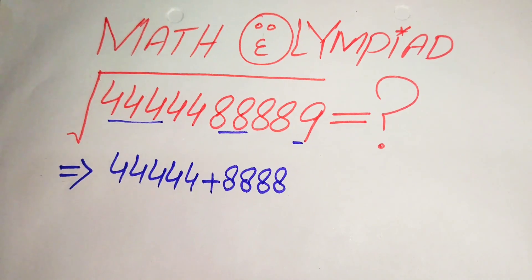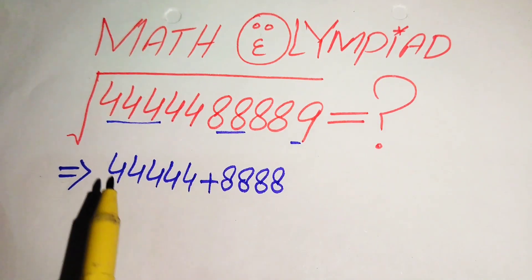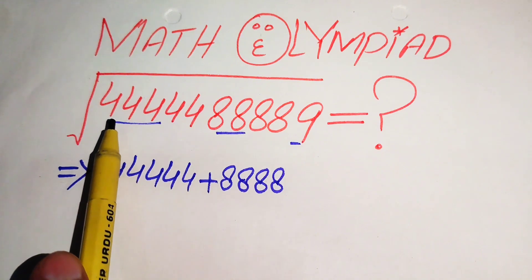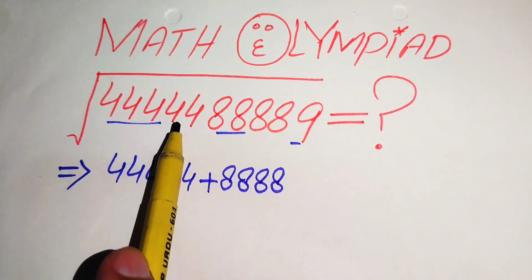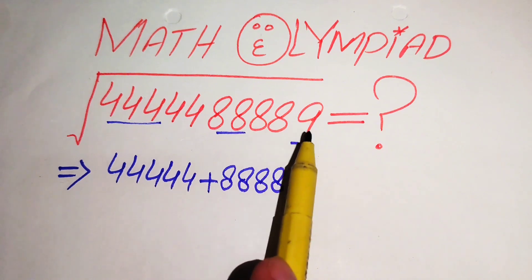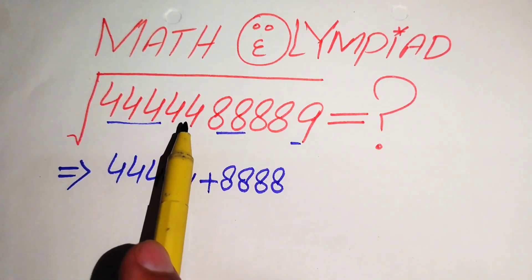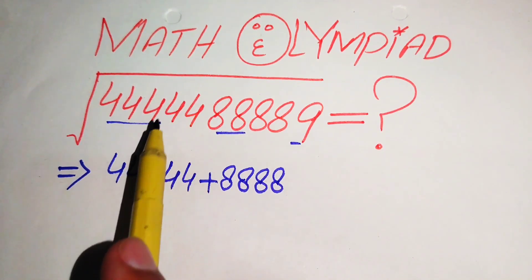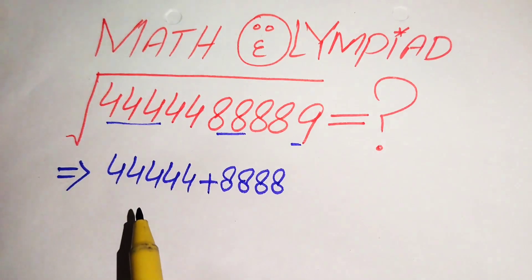Hello everyone, welcome. We are going to solve this math algebra problem. Here we have 5 times of 4, and 4 times of 8 into 9, and its whole square root. So we find the square root of this algebraic expression.